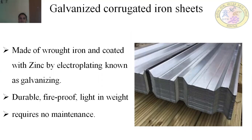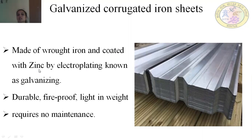Galvanized corrugated iron sheets are made of wrought iron coated with zinc by electroplating, a process known as galvanizing. These sheets are durable, fireproof, light in weight, and require no maintenance.